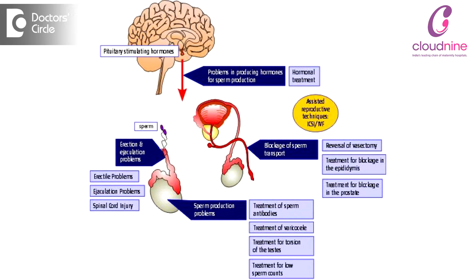Azoospermia can be of two types: one where there is sperm production but it is not coming out into the ejaculate, which is termed obstructive azoospermia — meaning there is an obstruction in the pathway of the sperms coming out — or non-obstructive azoospermia, where the testicular production of sperm is defective and there is no sperm production happening at all in the testis.